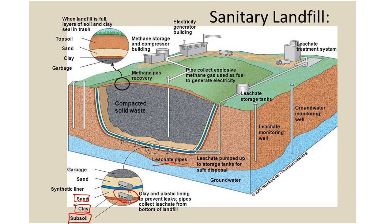Leachate is water that contains leached metals, minerals, toxins, nutrients, and anything water-soluble. Water gets into the landfill, dissolves metals, nutrients, and persistent organic pollutants, and all of it stays in that water. It will hopefully get into the collection pipes and be pumped out for treatment via a leachate treatment system. So you have a leachate treatment system where all that contaminated water is processed.